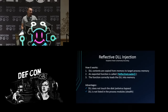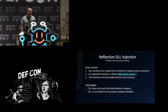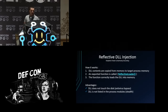Reflective DLL injection was implemented by Stephen of Harmony Security, and this is how it works. The full DLL content is copied into the target process memory. However, the DLL doesn't look the same in process memory as it does on disk, so it has to auto-load itself correctly. For this, reflective DLL injection uses a function called the reflective loader, which does all the steps necessary to correctly load the DLL. Windows uses the Process Environment Block (PEB) to keep a linked list of all process modules.